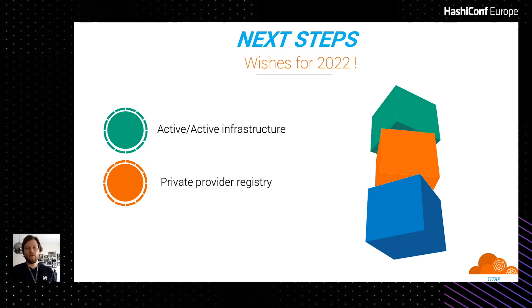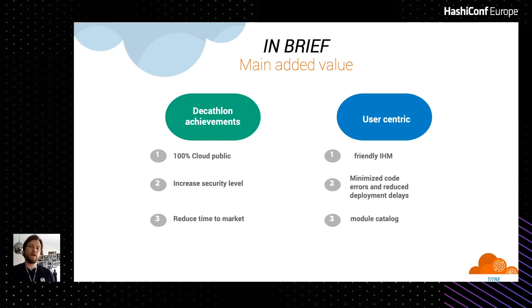For the last part, I want to focus on the main added value for Decathlon users. Regarding Decathlon's achievements, we can note that 100% of our infrastructure is hosted in the public cloud, we increased the company's security level, and we reduced time to market. For our users, we provide a friendly web interface for non-developer people, we minimize code errors and reduce deployment delays, and we provide a catalog that covers the main needs — with our most experienced users participating in building that offer. Thank you, goodbye.